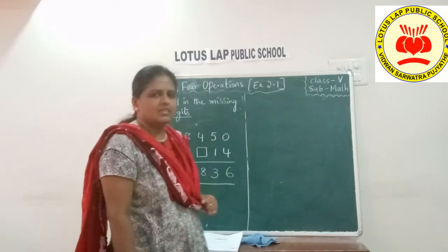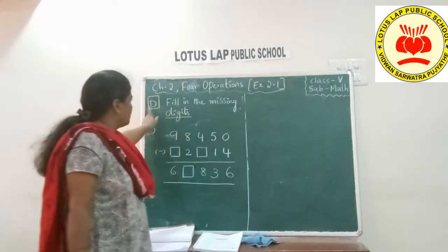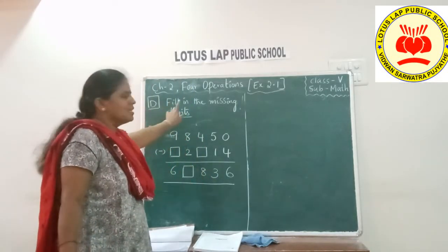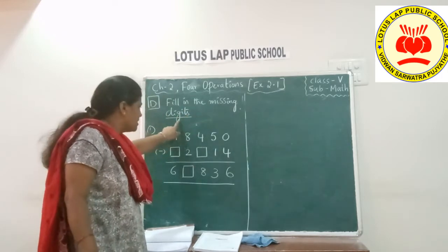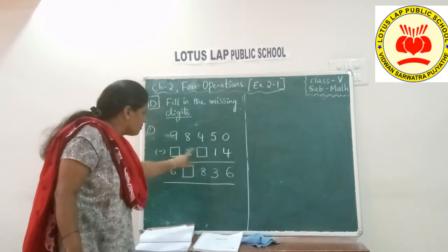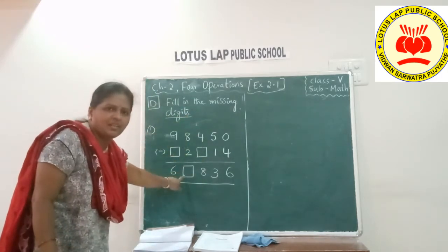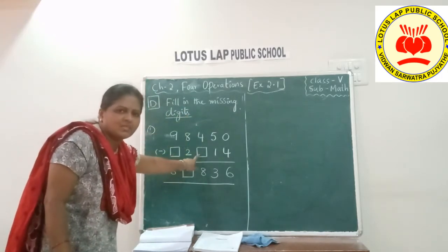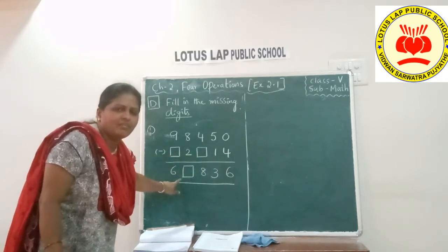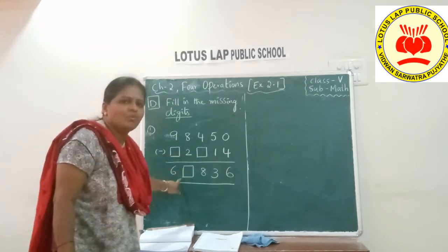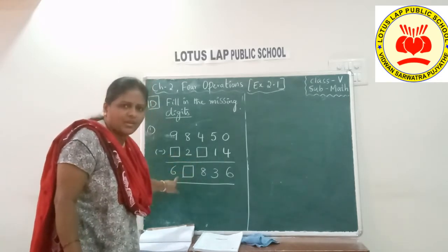Okay children, let us go on to the fourth bit. What is that? Filling the missing digits. Here some missing digits are there, children. Empty boxes are there — we have to find what goes there and fill them in.